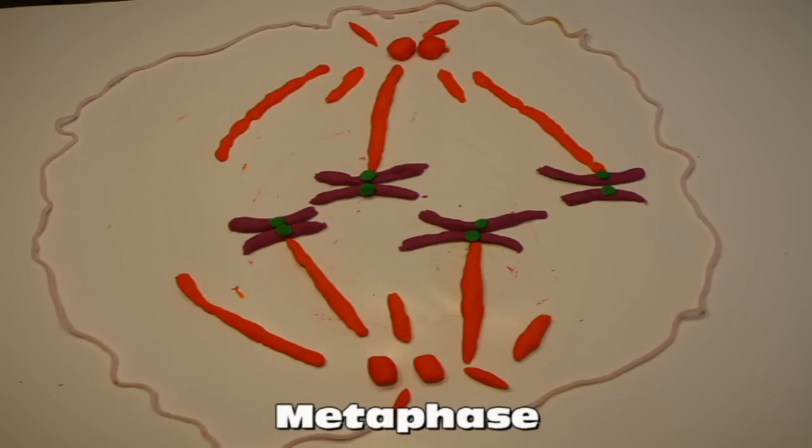In metaphase, the mitotic spindle is formed completely and each of the chromosomes have lined up between the centrosomes at the metaphase plate. The kinetochores of each chromatid face opposite poles and are connected by microtubules.